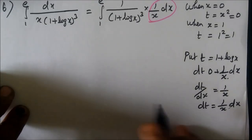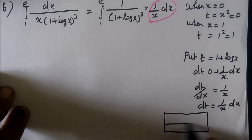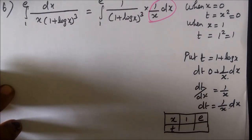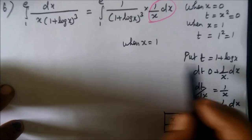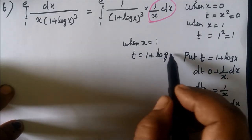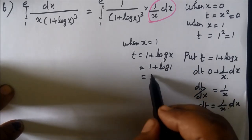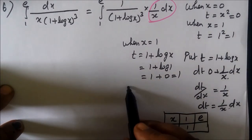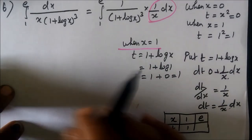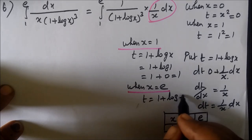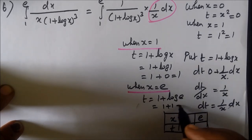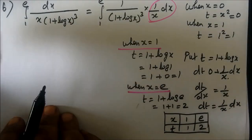Now change the limits. The x limits are 1 to e. When x equals 1: t equals 1 plus log 1 equals 1 plus 0 equals 1. When x equals e: t equals 1 plus log e equals 1 plus 1 equals 2. So the new limit is 1 to 2.